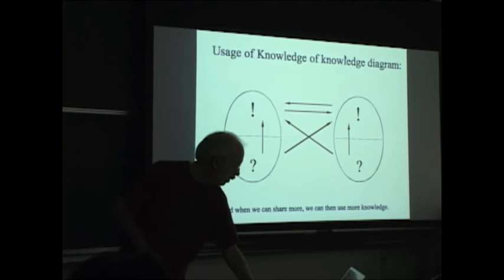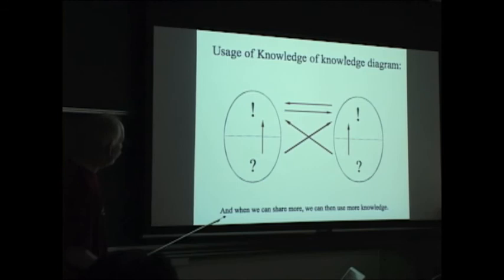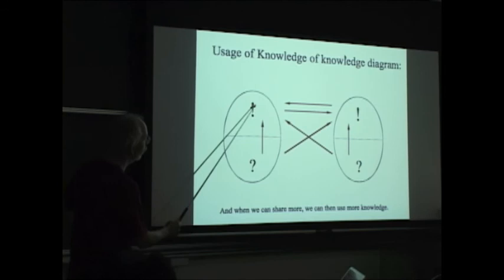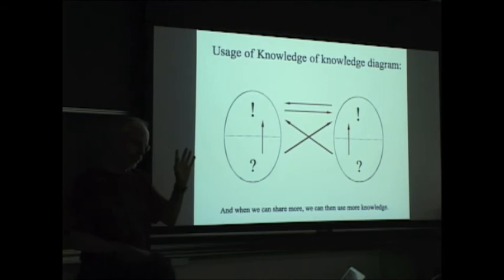So, the usage of knowledge going from the shared knowledge, the usage of knowledge of knowledge. When we can share more, we can use the knowledge. So, we can use not only our own knowledge, but we can also use the tacit knowledge of the other side. You see, it is not yet category theory, but there are many arrows. So, this is a step. And actually, I think some of this can be put in the language of category theory, but maybe someday.